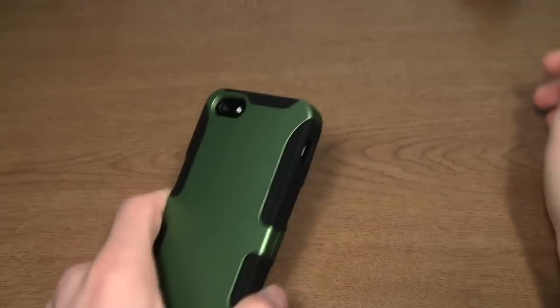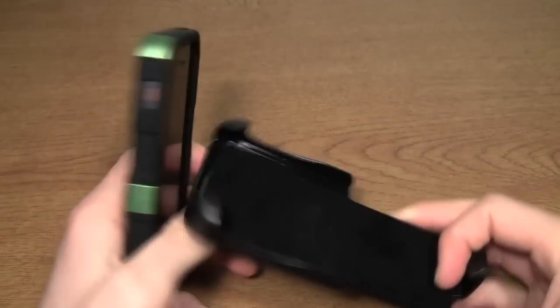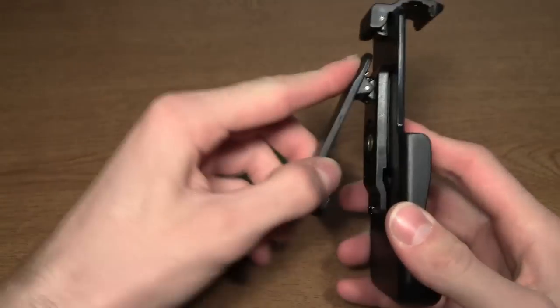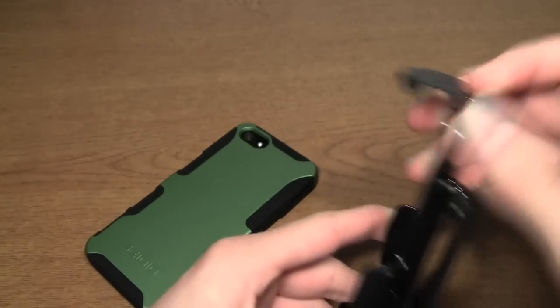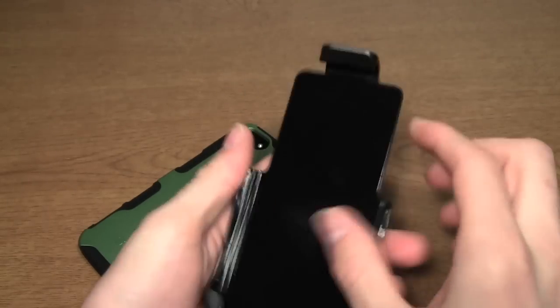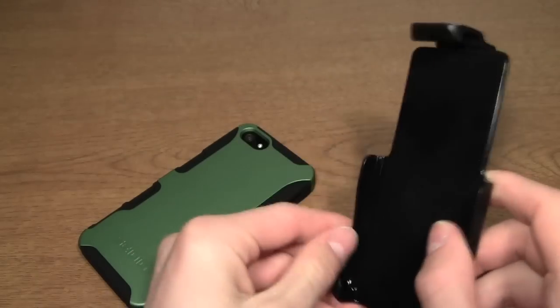Now this Seidio Active case is also compatible with the Seidio Active holster. Now this is actually a really nice holster. It's plastic. It has like a spring clip here to hold your phone in and it's lined with a felt in here to protect the screen.